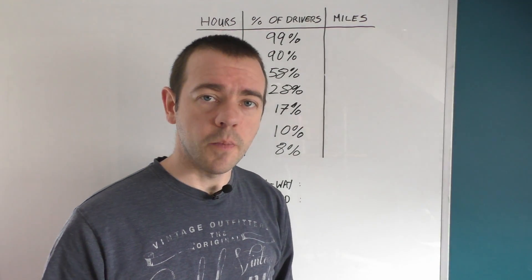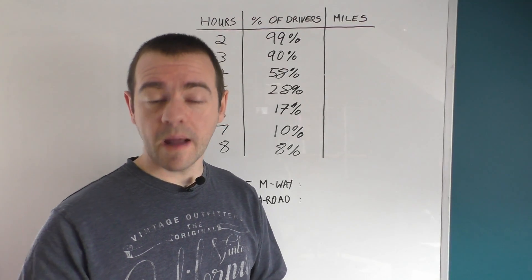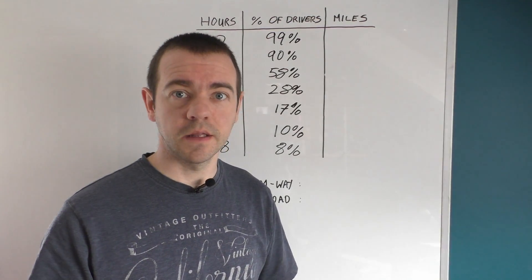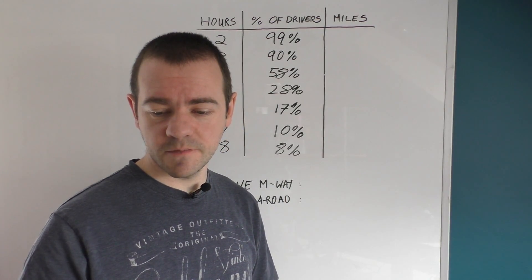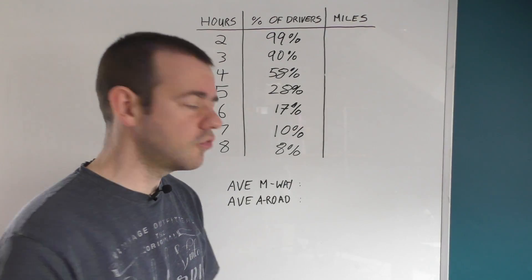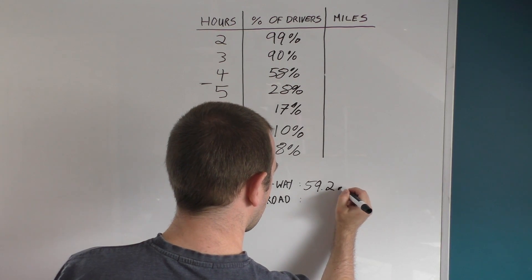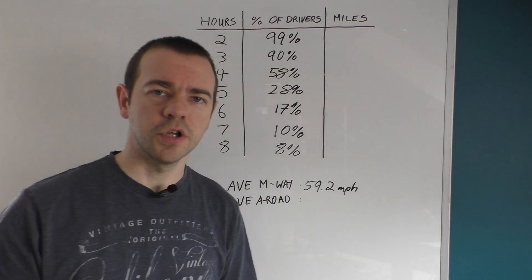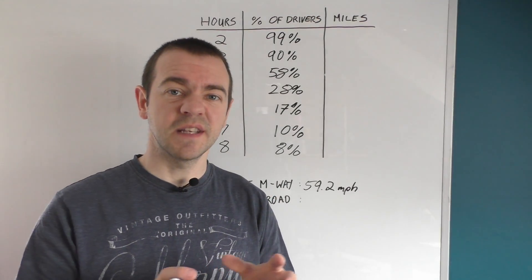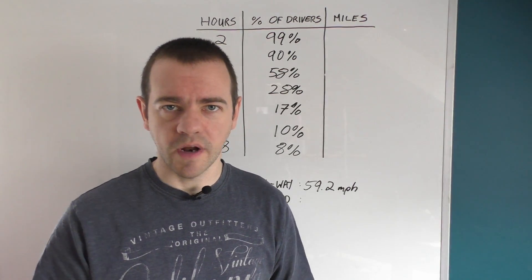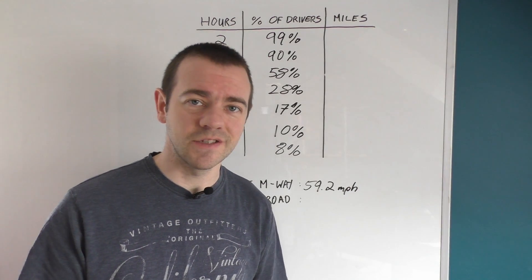For this I'm going to turn to a Department for Transport study, basically the UK government, and that gives us the average speeds on UK roads. And according to them, the average speed for the strategic road network of this country is 59.2 miles per hour. Apologies for my writing. So 59.2 miles per hour. A strategic road network is basically motorways, major A roads, and dual carriageways.